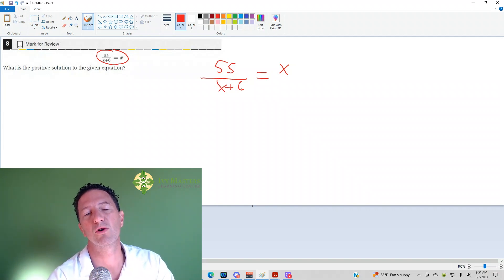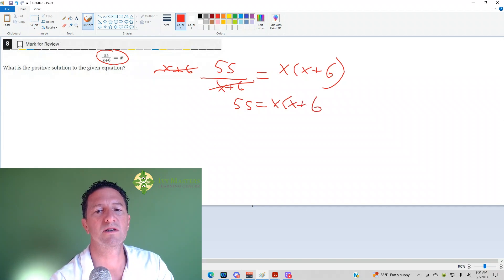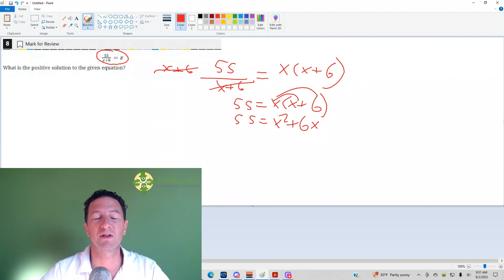Another way to think of it is to put over 1, cross multiply. I'm going to multiply both sides by x plus 6, it cancels here. We get 55 equals x times square root of x plus 6, and I have to distribute. 55 equals x squared plus 6x. Now some of you might be like, I don't know how to do this.